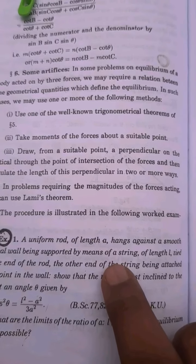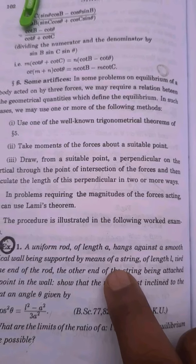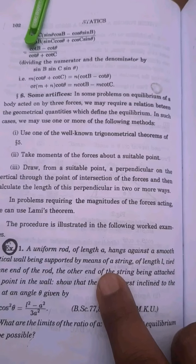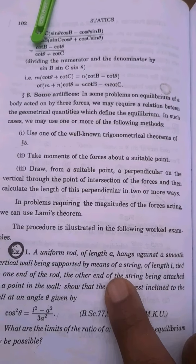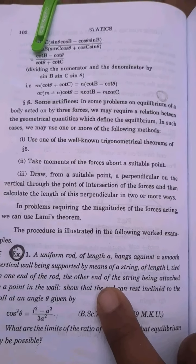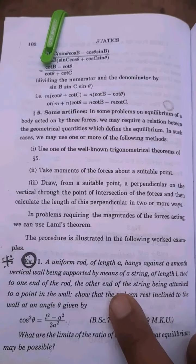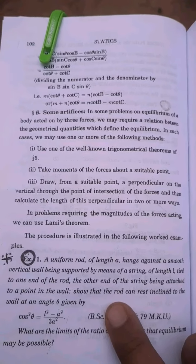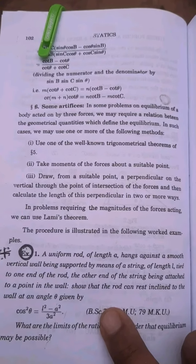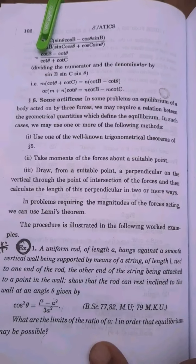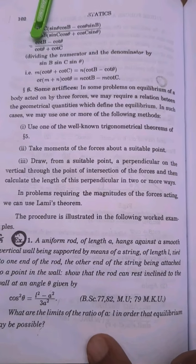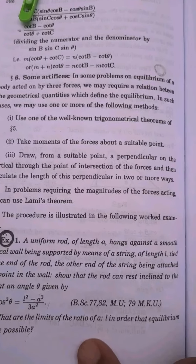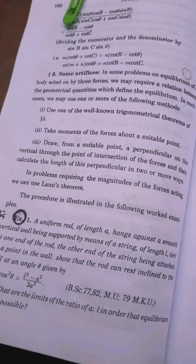Problem 1. A uniform rod of length A hangs against a smooth vertical wall, being supported by means of a string of length L tied to one end of the rod, the other end of the string being attached to a point in the wall. Show that the rod can rest inclined to the wall at an angle theta given by cos squared theta equal to L squared minus A squared by 3A squared. What are the limits of the ratio A to L in order that equilibrium may be possible?